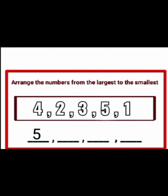Here we want to arrange the numbers from the largest to the smallest. The numbers given are 4, 2, 3, 5, 1. The correct order from largest to smallest is: 5, then 4, then 3, then 2, then 1.